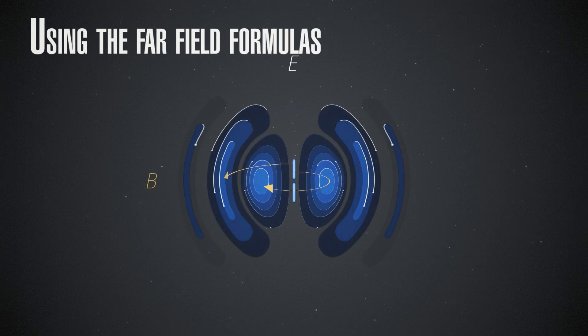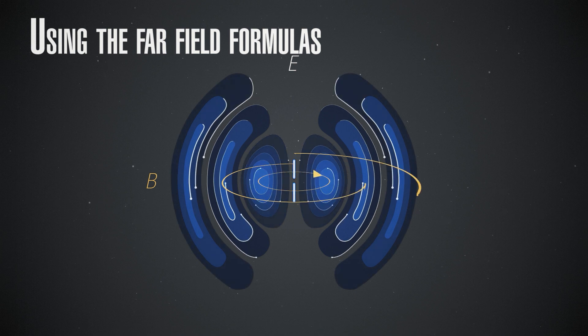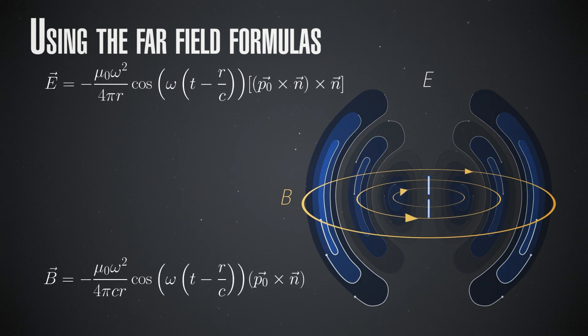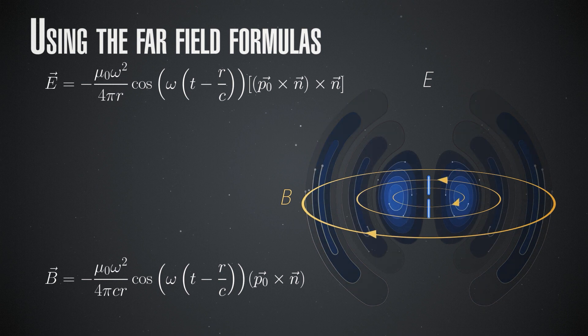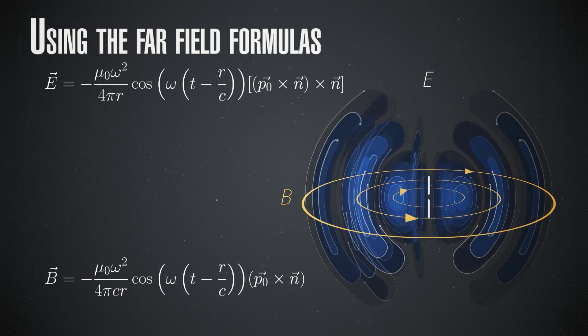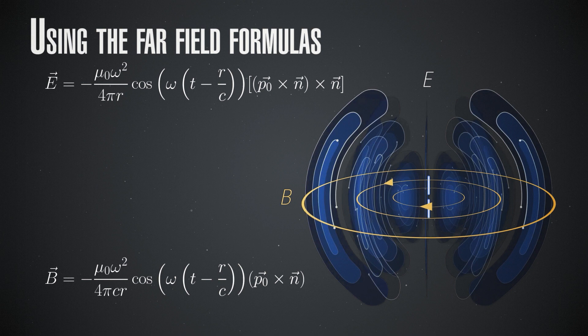We note once again that we have a decrease in each of the two fields as 1/r — a linear decrease as we go further. This is what results in the quadratic decrease in power, since the Poynting vector is essentially the product of the two fields. Since each of them decreases linearly, the Poynting vector decreases quadratically, consistent with our simple argument of spreading the same power over a larger sphere.